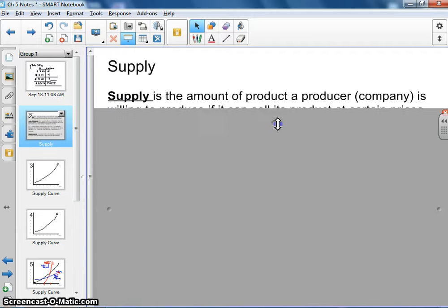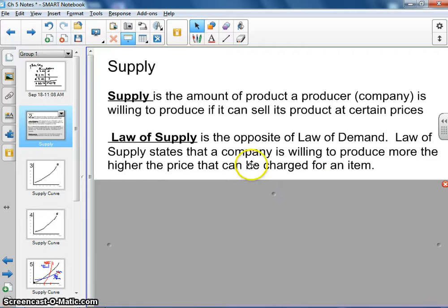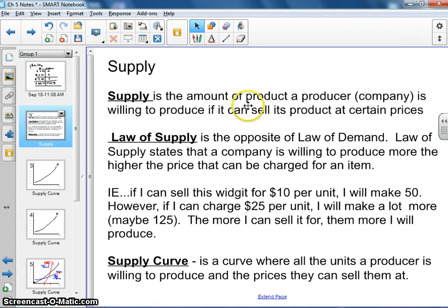So we talk about supply and law of supply. Supply being the amount of product that a producer or a company is willing to produce at every different price in the market. Law of supply states that a company is willing to produce more the higher prices they can charge for that item or service. Same idea, if you're able to make a widget and sell it at $10 per, maybe you'd make 50. If you could sell it at $25 per, you'd probably make more because there's more profit to be made.